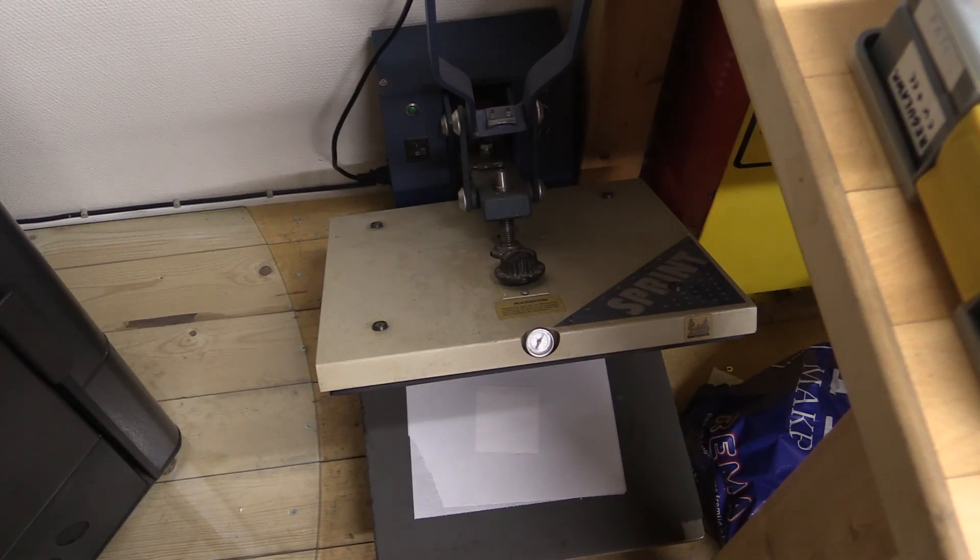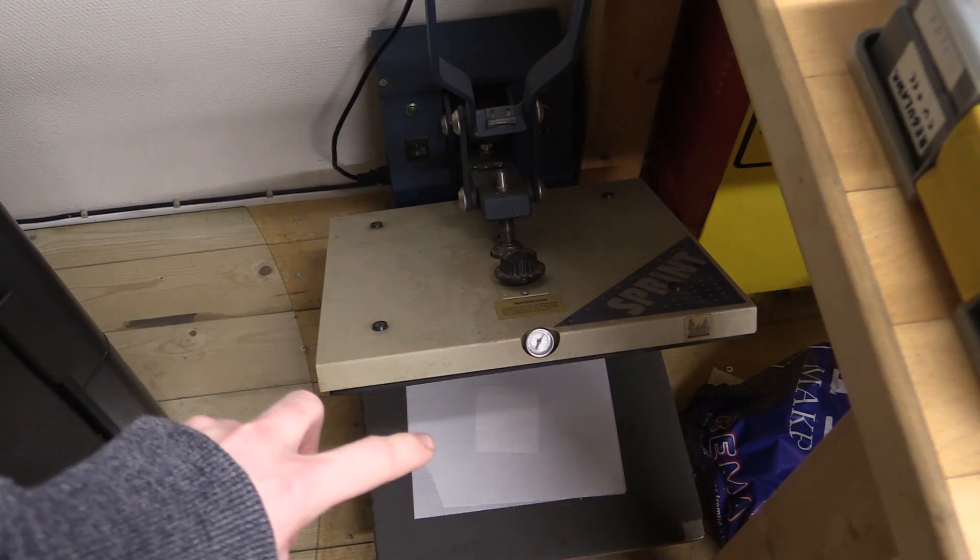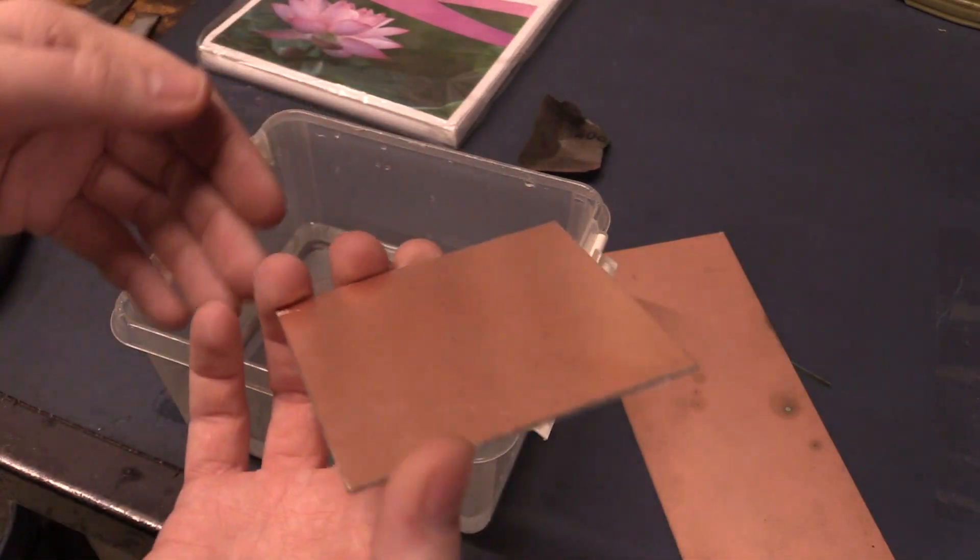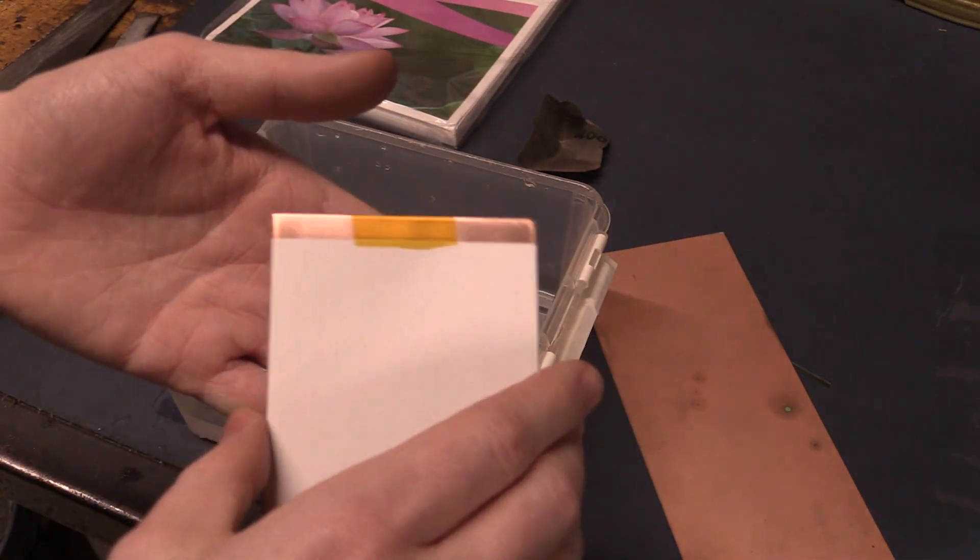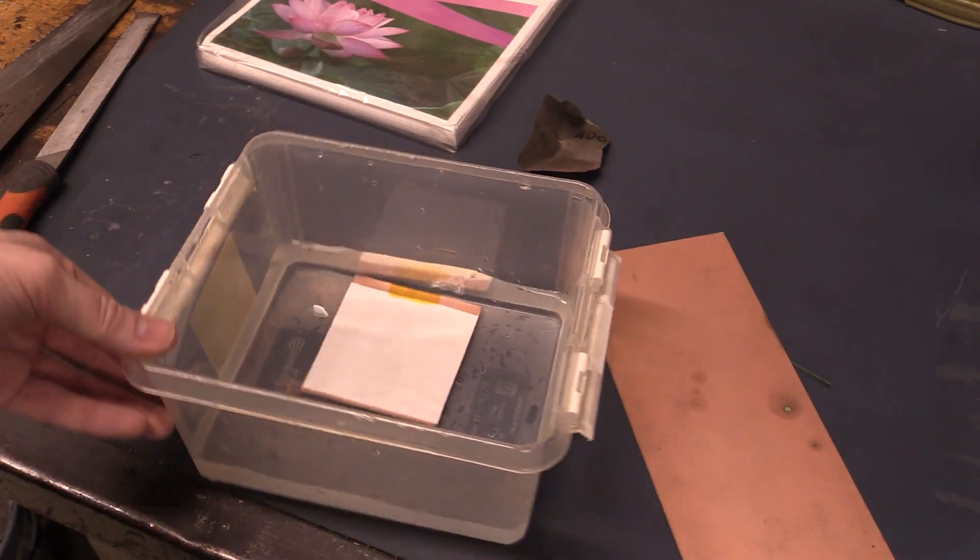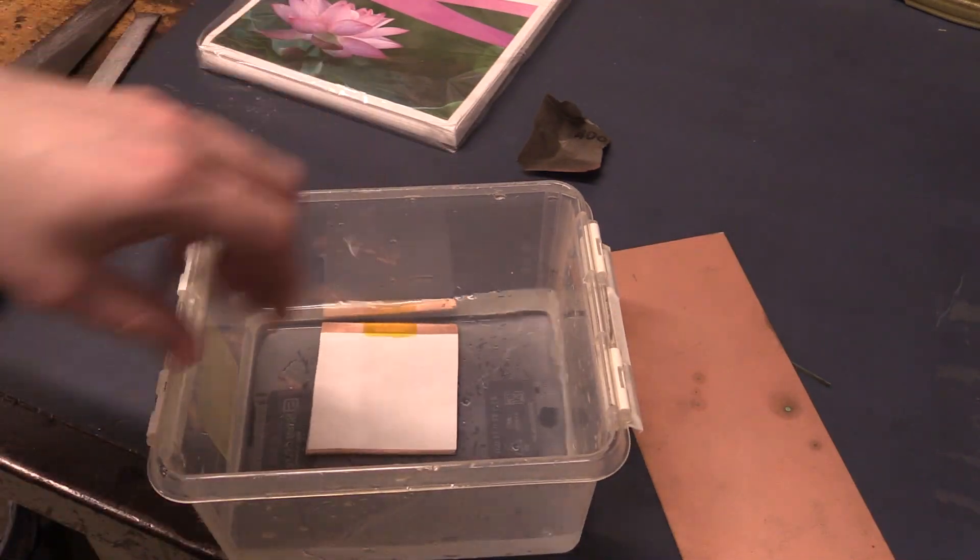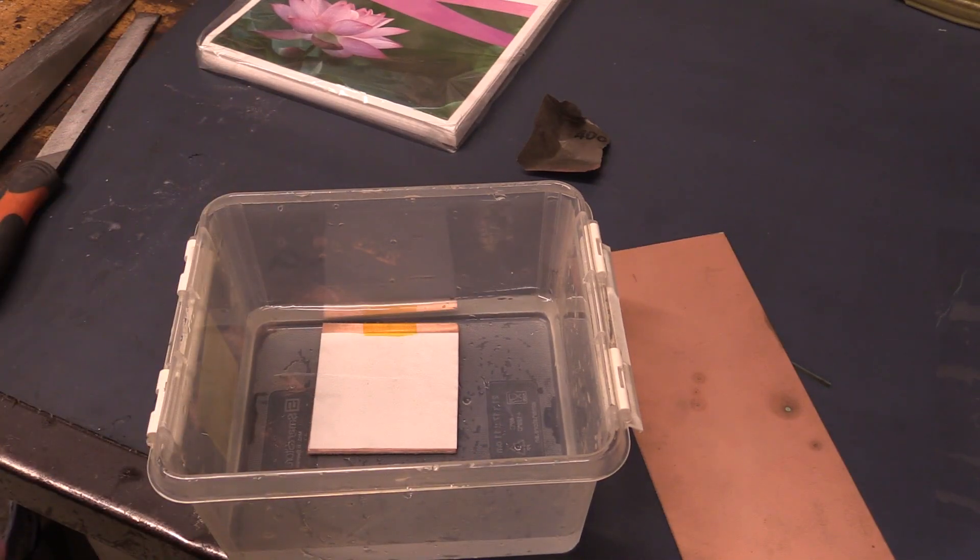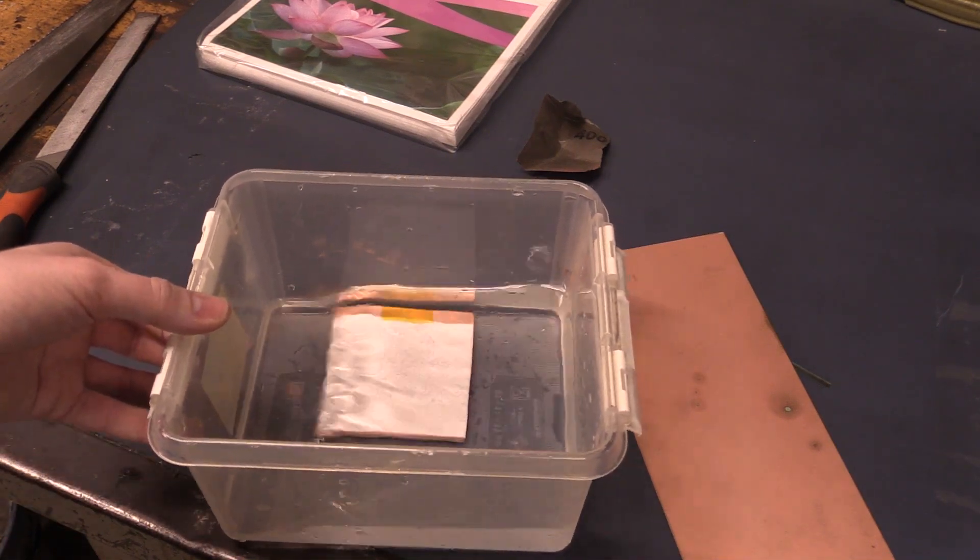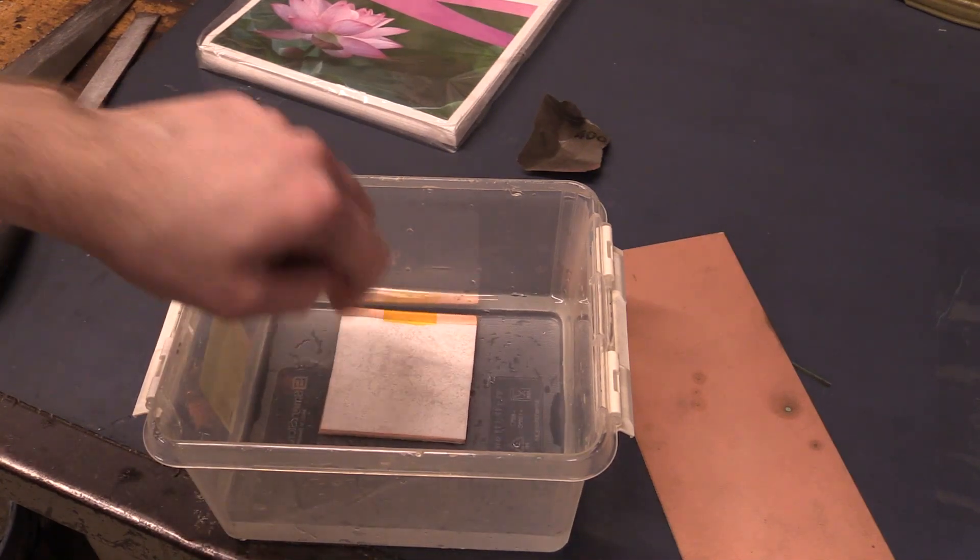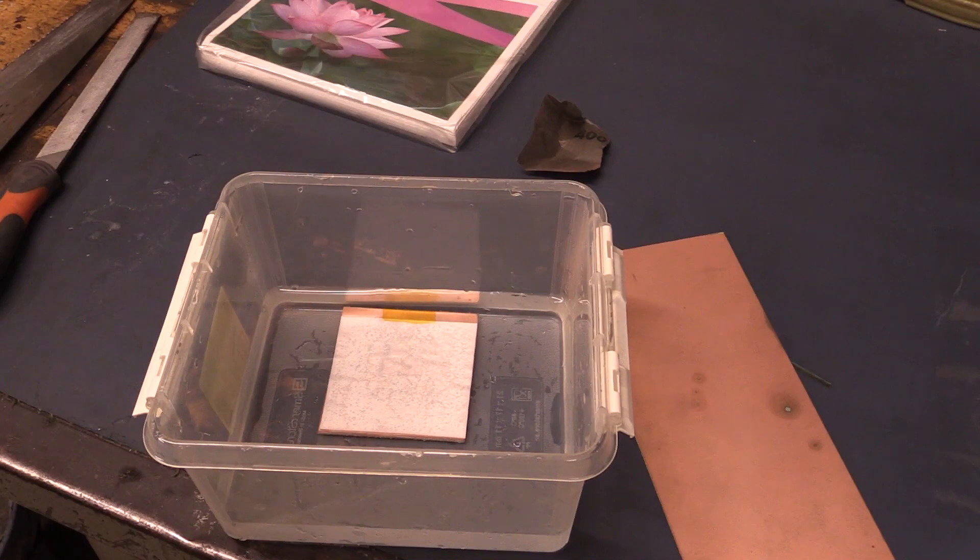While you do that you can prepare a tub of water to dissolve the paper. Once the PCB is cooled reasonably, it's about 45 degrees Celsius, you just dump it into some water. That will soak into the paper and dissolve it so that only the toner is left on the copper. You can see it starts right away, just leave it for 5-10 minutes.